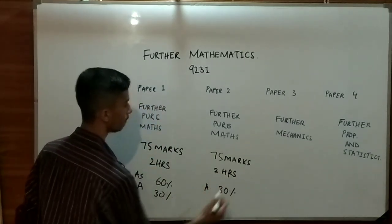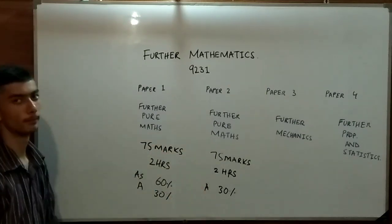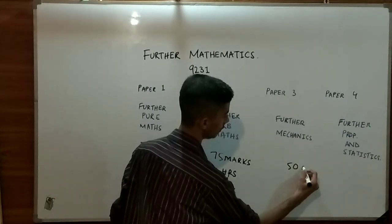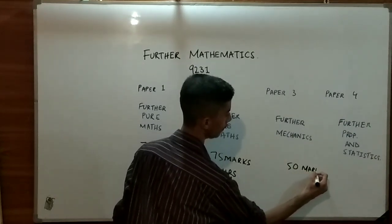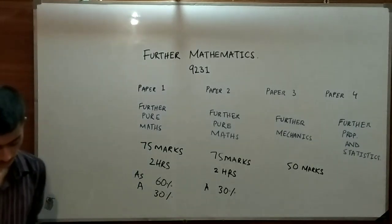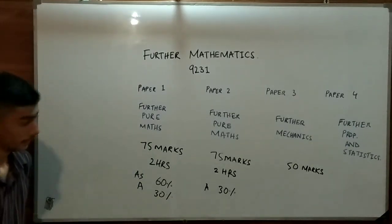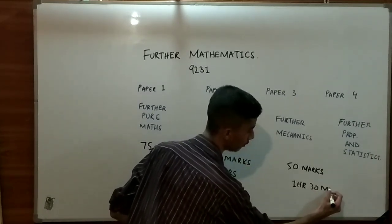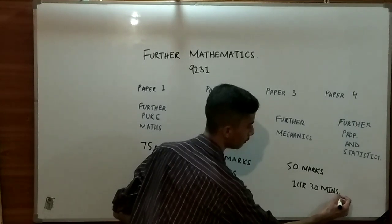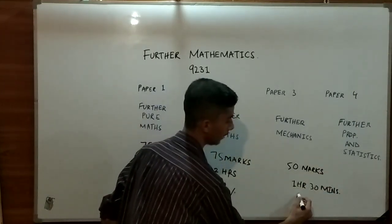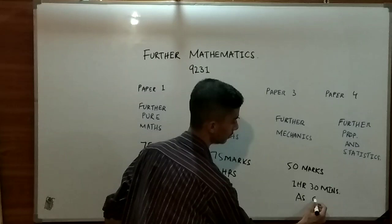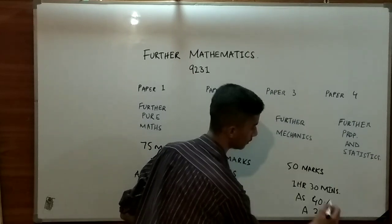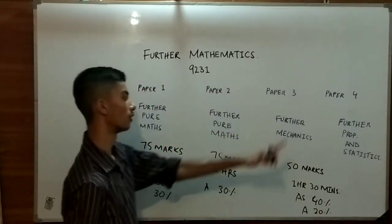Paper 3 is of further mechanics. This paper has 50 marks and has a time duration of 1 hour and 30 minutes. In AS it has 40%, while in A-levels it has 20%.